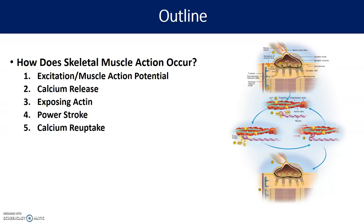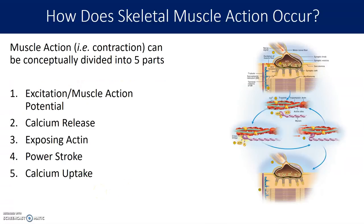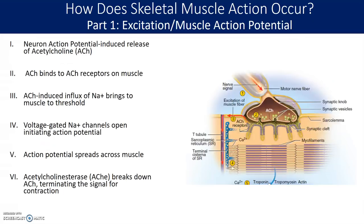We've talked a lot about that when we discuss the nervous system. The second step is the release of calcium, which causes a third step: the exposing of actin. Fourth step is the power stroke, or the movement of the myosin. And then the fifth step to end the contraction is calcium reuptake. Those are the five major steps of a muscle action, and we'll go through these one by one.